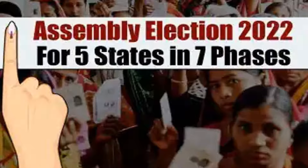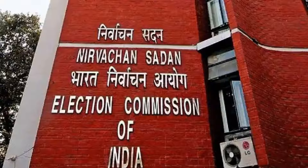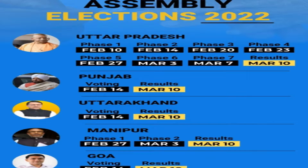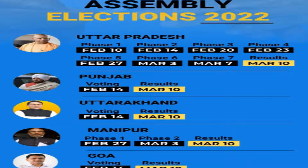It is mandatory for political parties to upload on their website detailed information regarding individuals with pending criminal cases selected as poll candidates. They will also have to give a reason for selecting such a candidate. EVMs and VPATs will be utilized in all polling stations, and the Election Commission has already made arrangements to ensure an adequate number for the smooth conduct of elections.